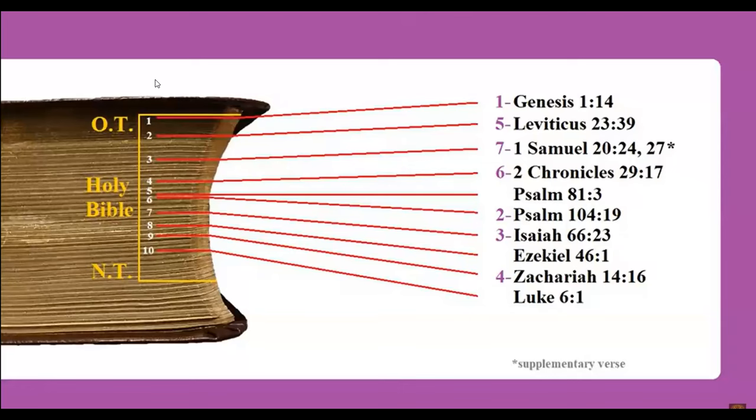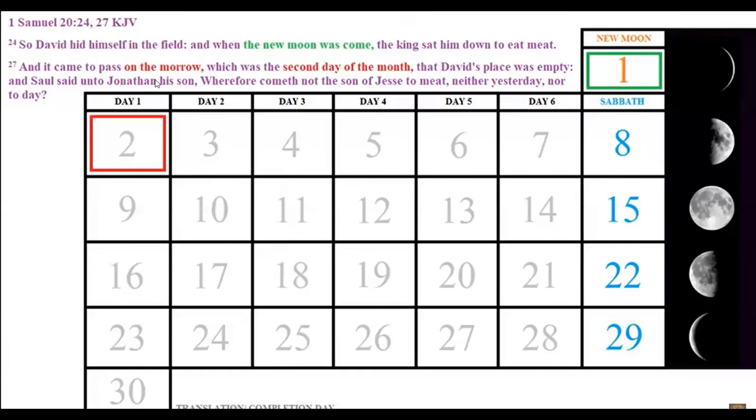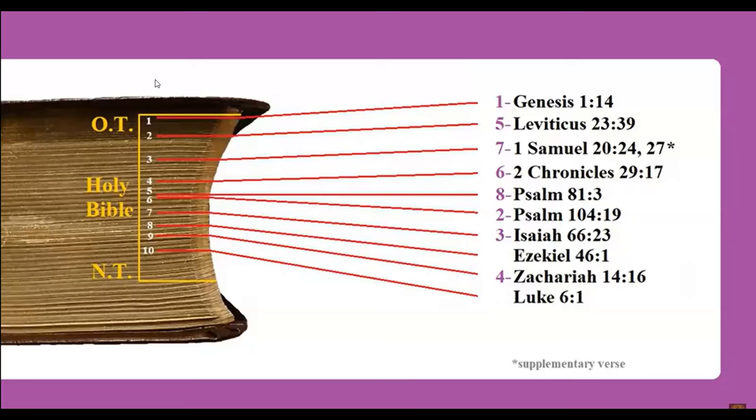But you may ask, how do we know which one is the first day of the month? 1 Samuel 20 can explain this quite well: 'So David hid himself in the field: and when the new moon was come, the king sat him down to eat meat. And it came to pass on the morrow, which was the second day of the month, that David's place was empty.' From this verse you can clearly see that the new moon is always the first day of the month.